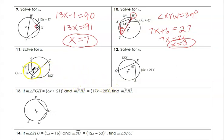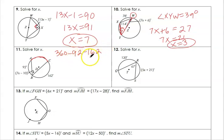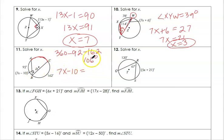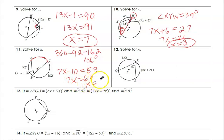Here we have another inscribed angle and its intercepted arc. We do 360 minus 92 minus 162, and that's 106. The angle is one half of the arc, so one half of 106 is 53. So 7X equals 63, meaning X is 9.